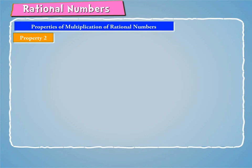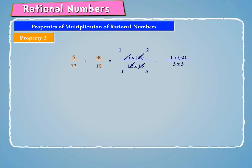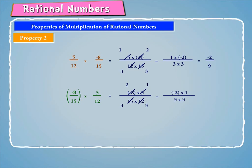Property 2: Let us consider the following examples. 5/12 into minus 8/15 is equal to minus 2/9. Also, minus 8/15 into 5/12 is equal to minus 2/9.